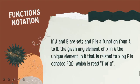If A and B are sets and F is a function from A to B, given any element X in A, the unique element in B that is related to X by F is denoted F(x), which is read F of X. So under the function annotations, we have two properties.